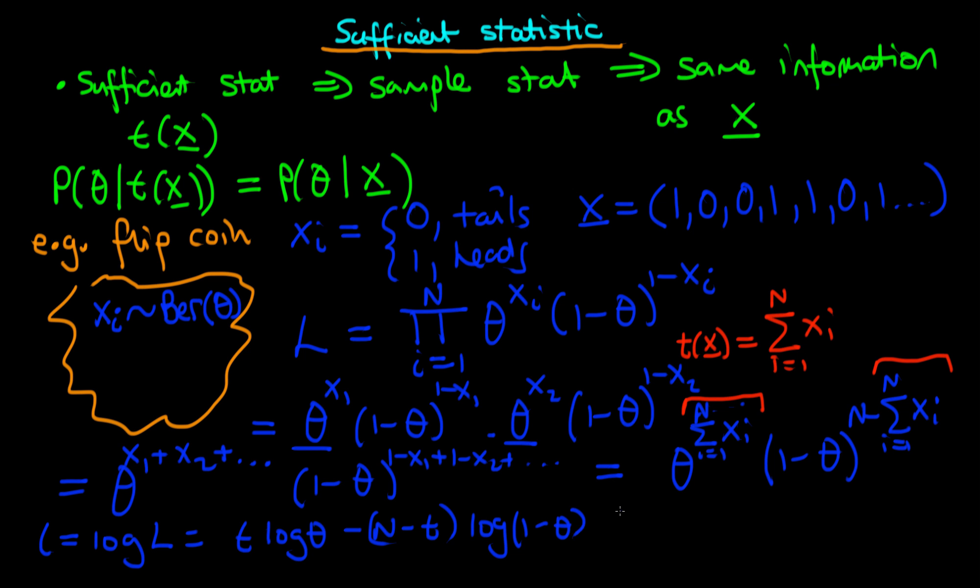And then if we go through and we differentiate dl over d theta, then obviously because we don't have x here, we just have t's, we're going to get a first derivative that just depends on t, theta and n. So when we set this as equal to zero, we get out an inference, theta hat, our estimated or maximum likelihood estimate of theta is just equal to t over n if you work through the calculation.